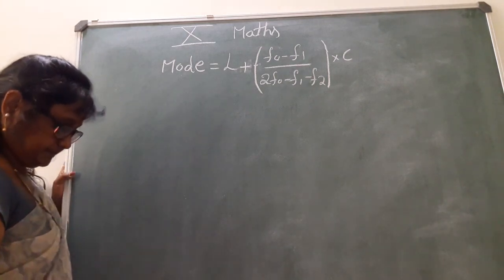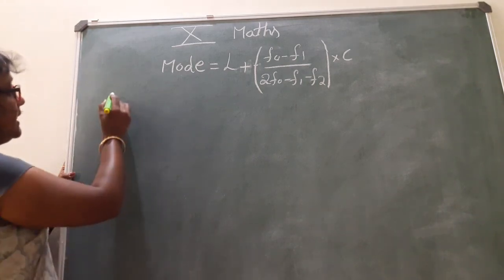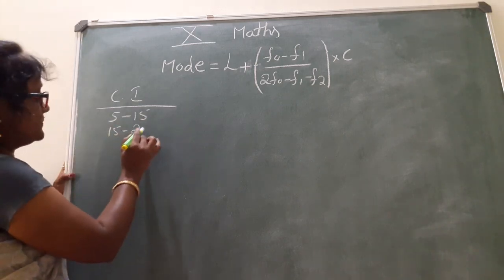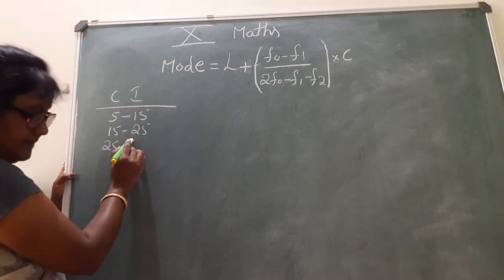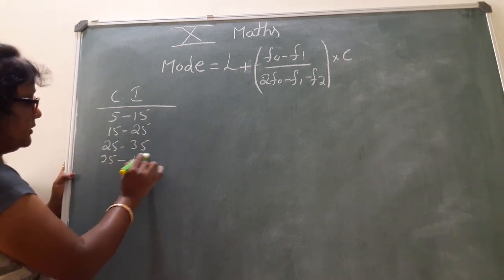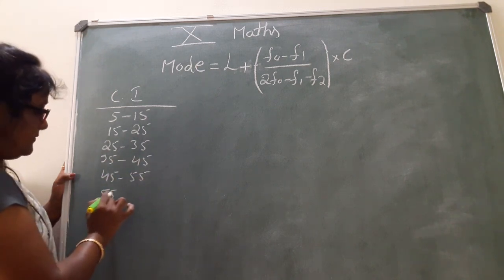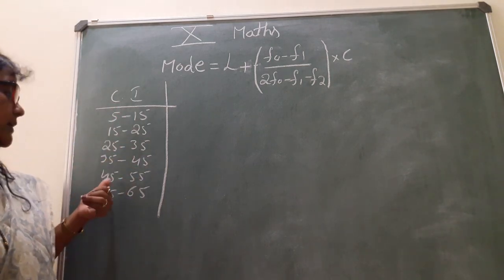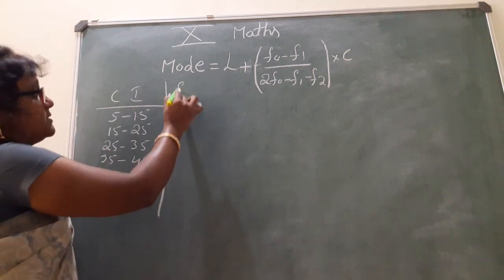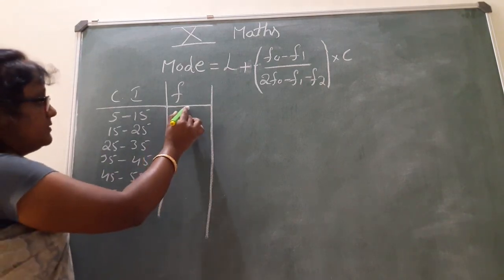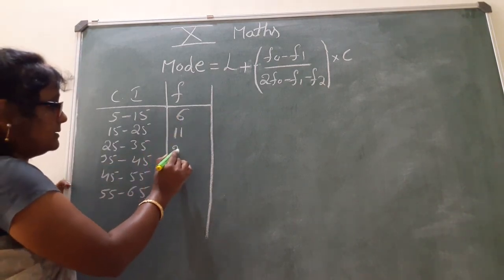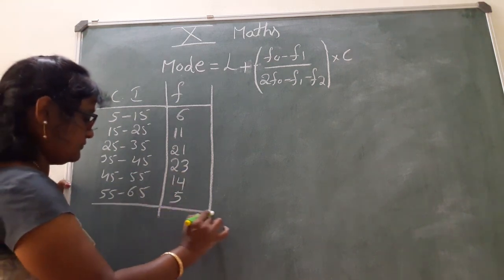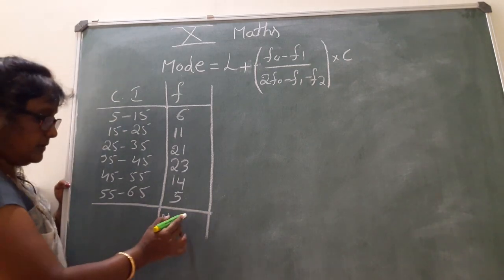See one example. Class intervals: 5 to 15, 15 to 25, 25 to 35, 35 to 45, 45 to 55, and 55 to 65. Corresponding frequencies: first value is 6, second is 11, next 21, next 23, 14, and last one is 5. Here, first we should write the value of N. N is equal to the total.